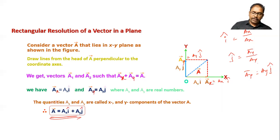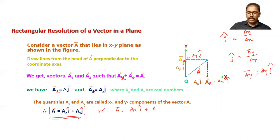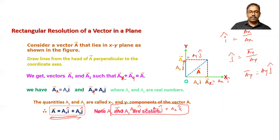In the three-dimensional case, a-bar can be written as ax·i-cap plus ay·j-cap plus az·k-cap, when we also consider the z-axis.